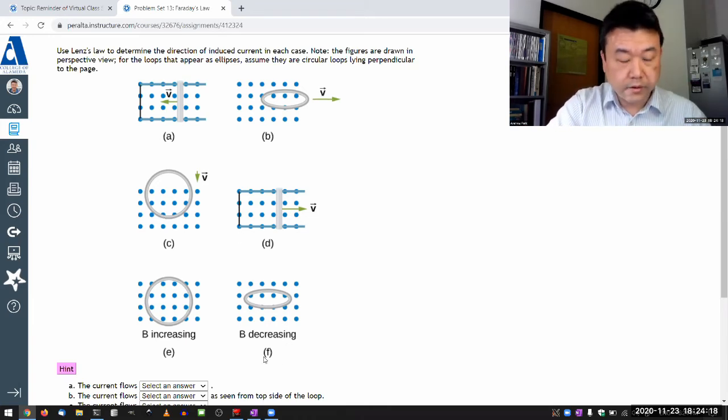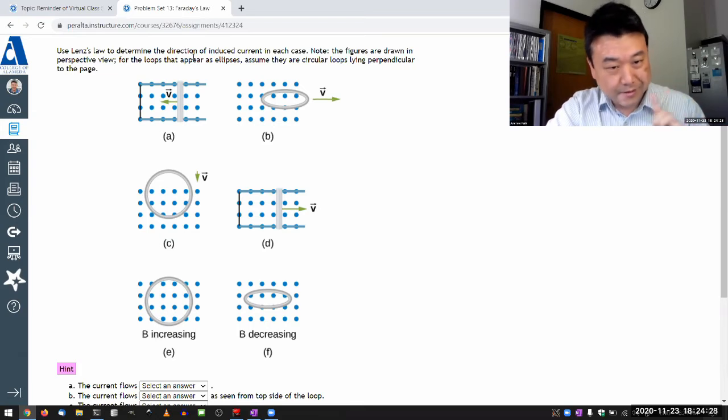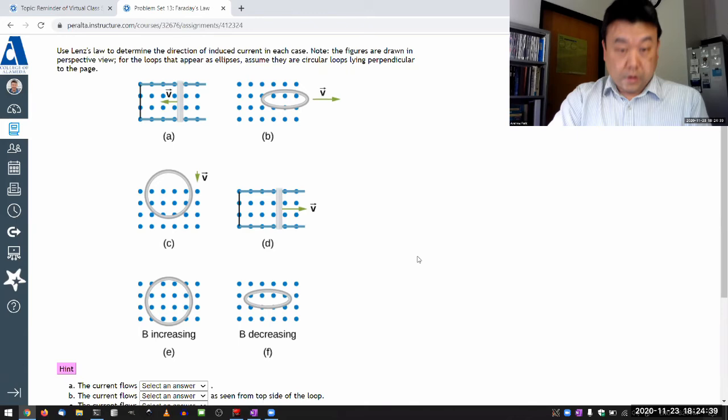I'll just start from A all the way through F. And just as a matter of reading the question, let me make sure I get this right. The figures are drawn in perspective view. For the loops that appear as ellipses, assume they are circular loops lying perpendicular to the page. So that's affecting B and F. Watch out for that.